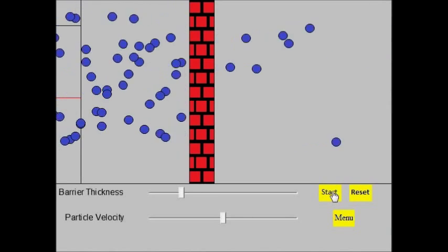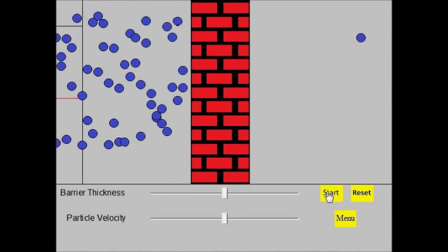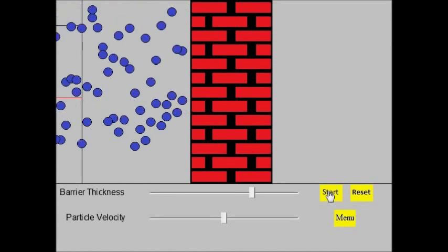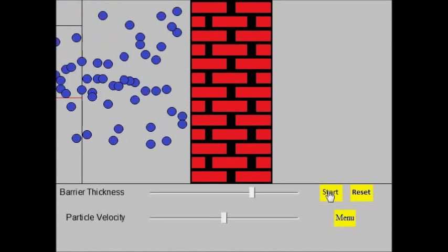The shorter the barrier, the more particles get through. If the barrier is thicker, fewer get through. Increase the thickness of the barrier further, and even fewer get through.